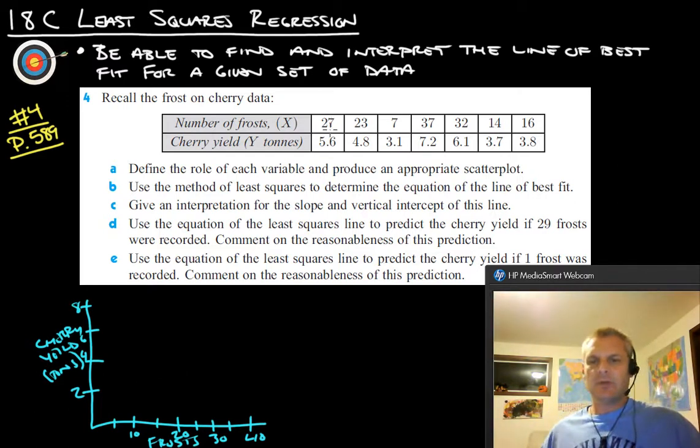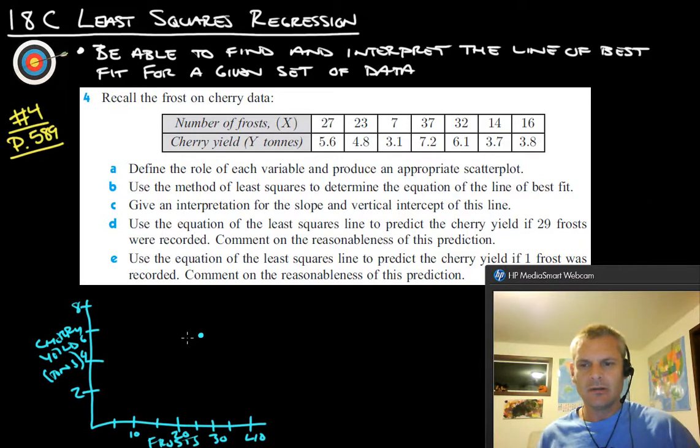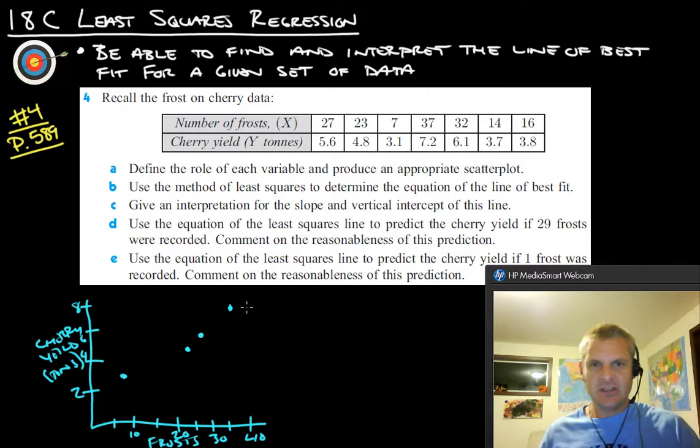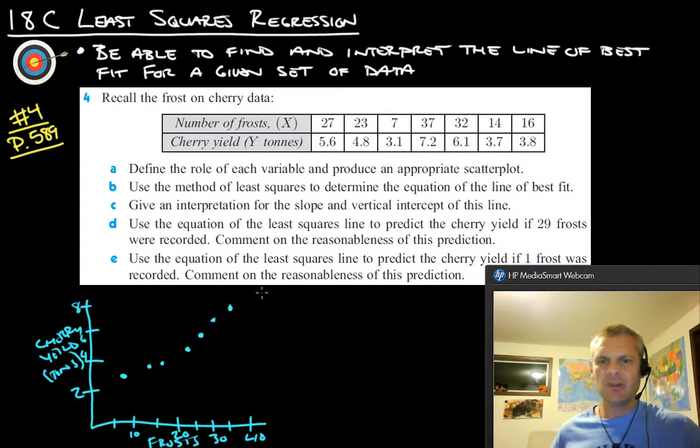So now we just want to graph the data here. So we got 27 and 5.6. So there's about 27 and, let's see, there's 6. So we'll call that about right there. 23 and 4.8. 23, 4.8, we'll call that about there. 7 and 3.1. That looks pretty good. 37 and 7.2. Let's see, 32 and 6.1. 14 and 3.7 and then 16 and 3.8. So it looks like that somewhat follows a straightish line.